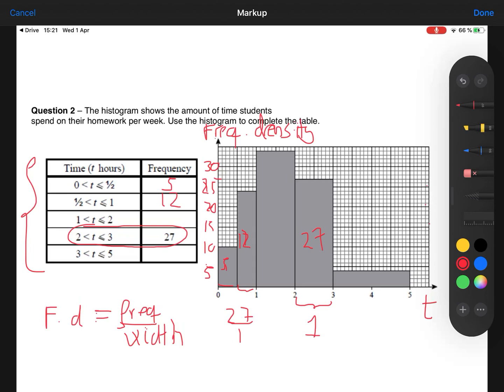Next bar, it's got a width of 1, from 1 to 2, we've got a width of 1, and a height of 34. So the area, width is 1, times height of 34. That is 34 people.